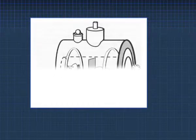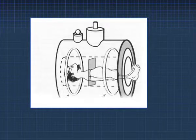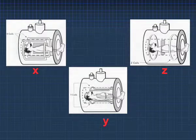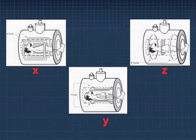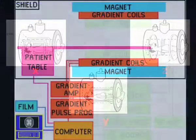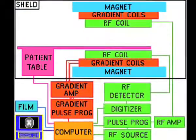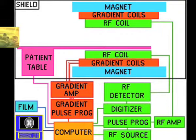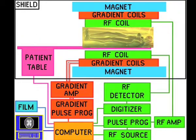The set of gradient coils for the Z axis are Helmholtz pairs, and for the X and Y axes, paired saddle coils are used. The RF coils are the antenna of the MRI system that broadcasts the RF signal to the patient and receives the return signal.